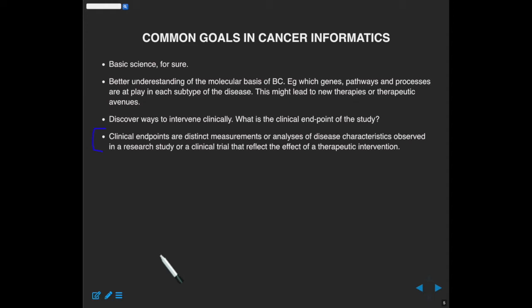Let's use cancer informatics as our example. Why are we doing this? Better science. We want to understand what's going on in that tumor — if we can pin down the genes and gene products involved in its progression or invasion, then we can maybe target those proteins or pathways, and they may have therapeutic potential. The formal definition of a clinical endpoint is: distinct measurements or analyses of disease characteristics observed in a study or clinical trial that reflect the effect of a therapeutic intervention. In other words, you need to precisely define what success is.